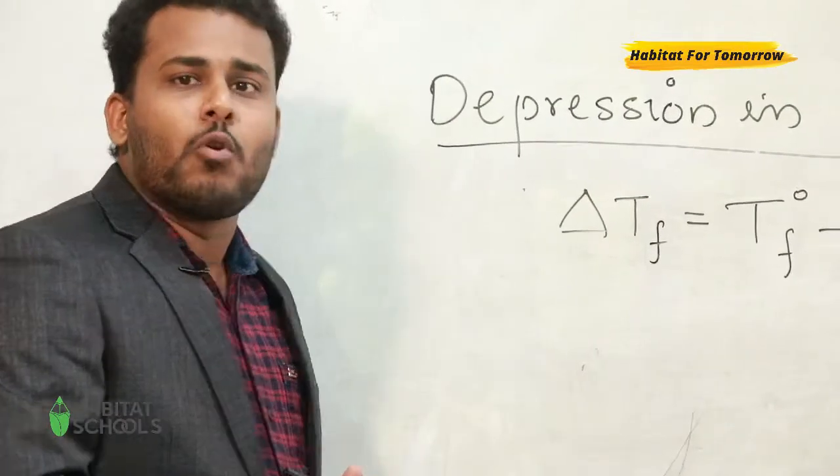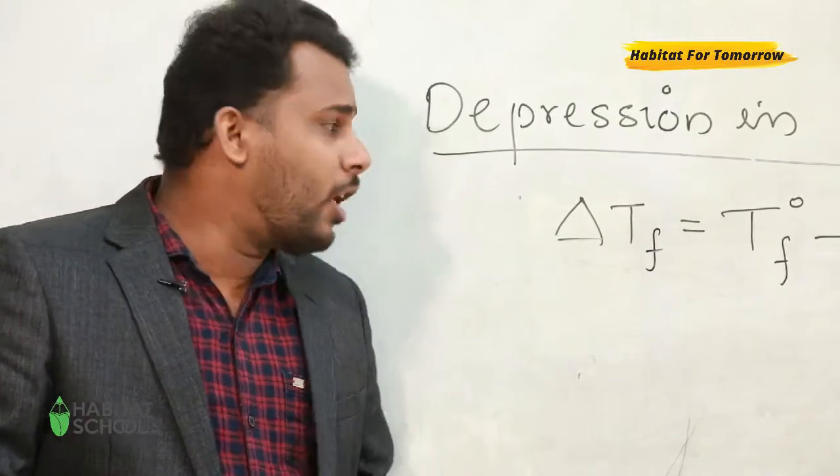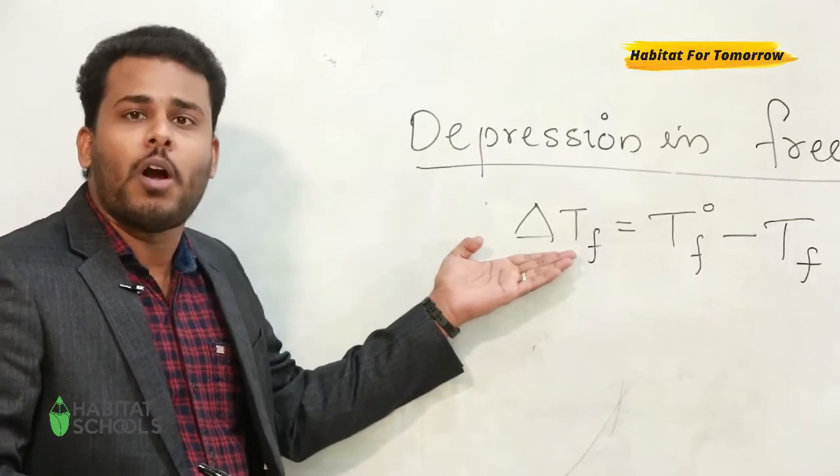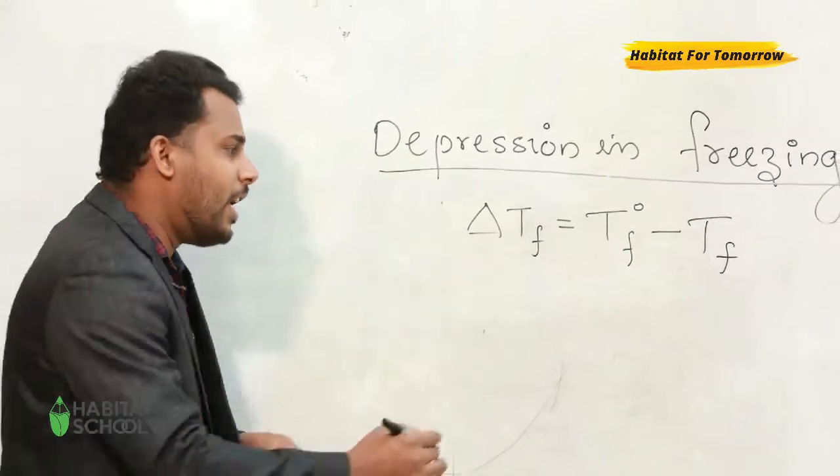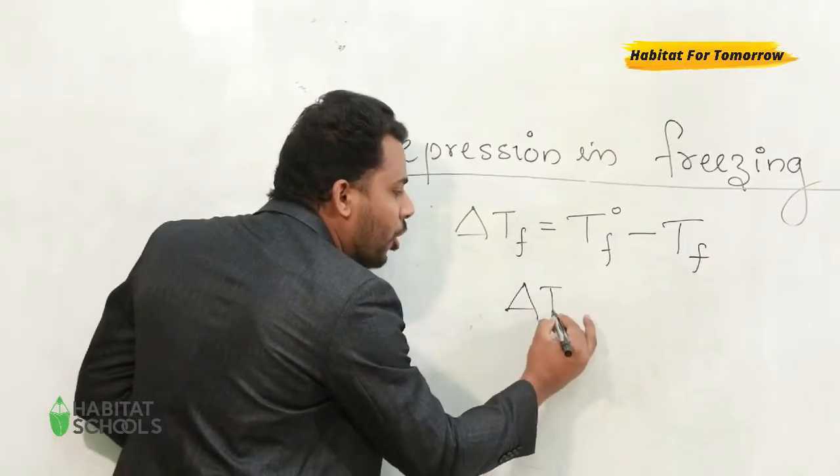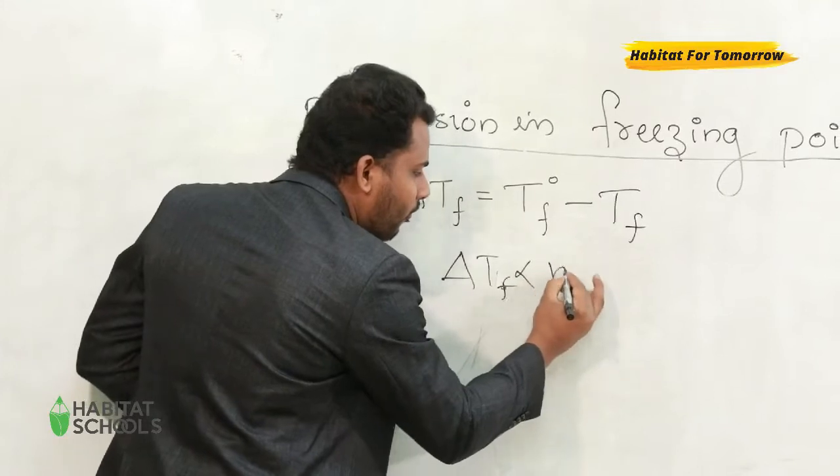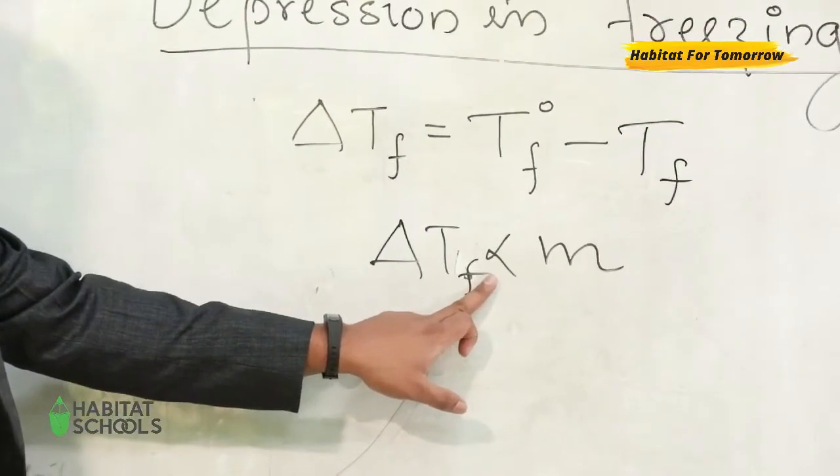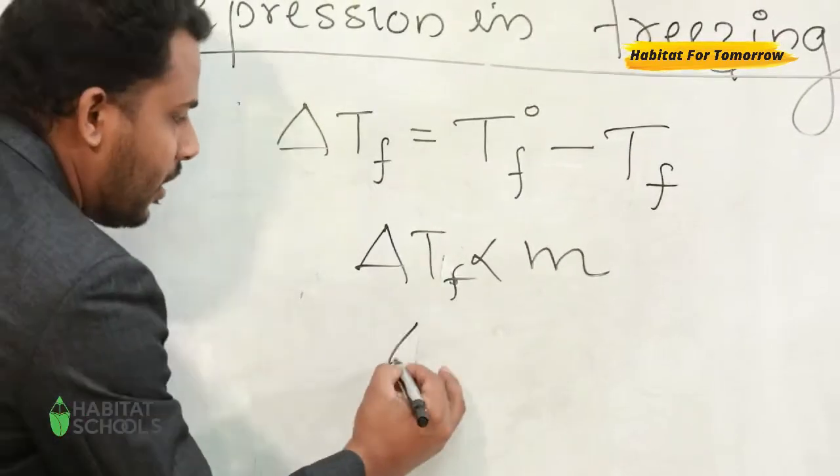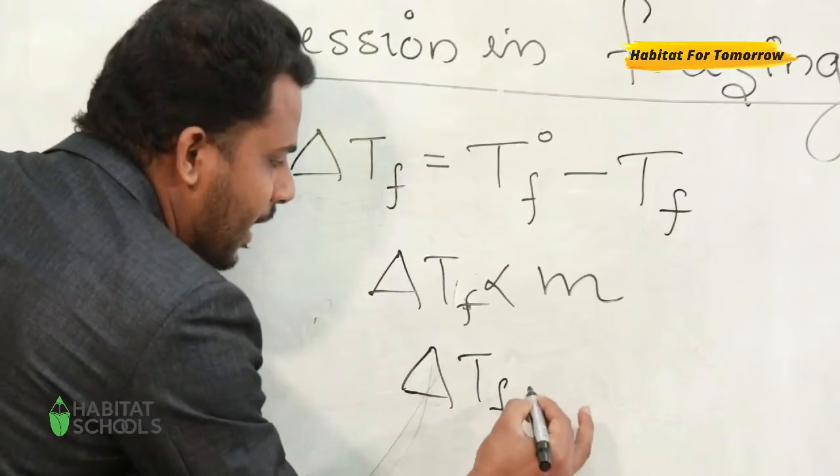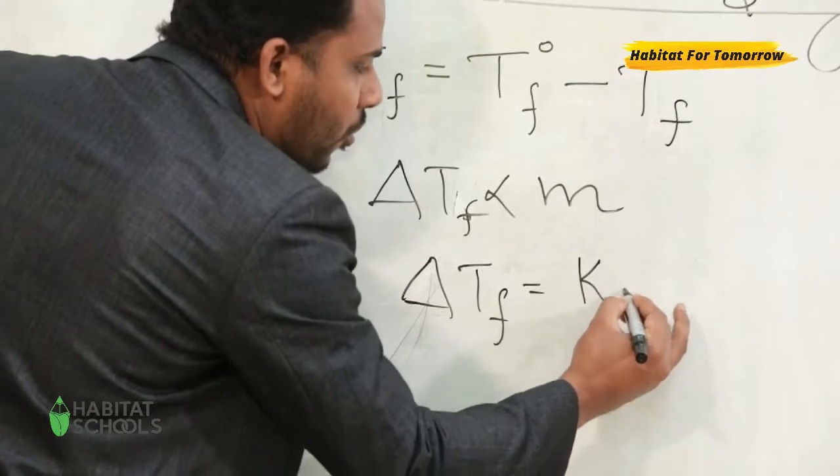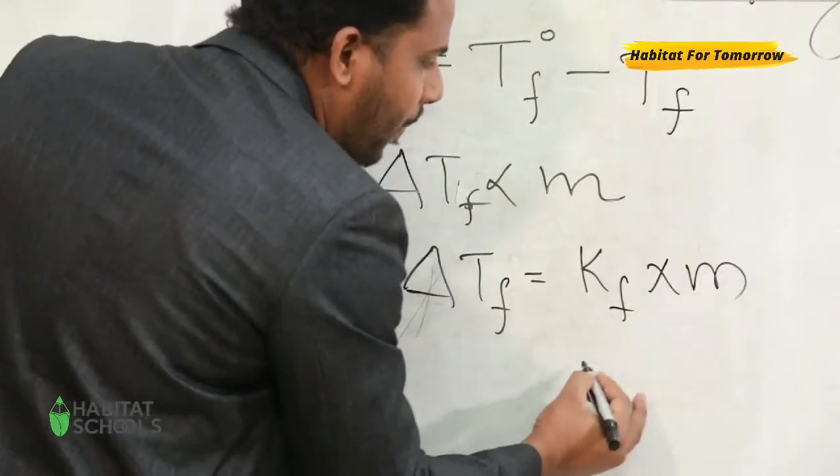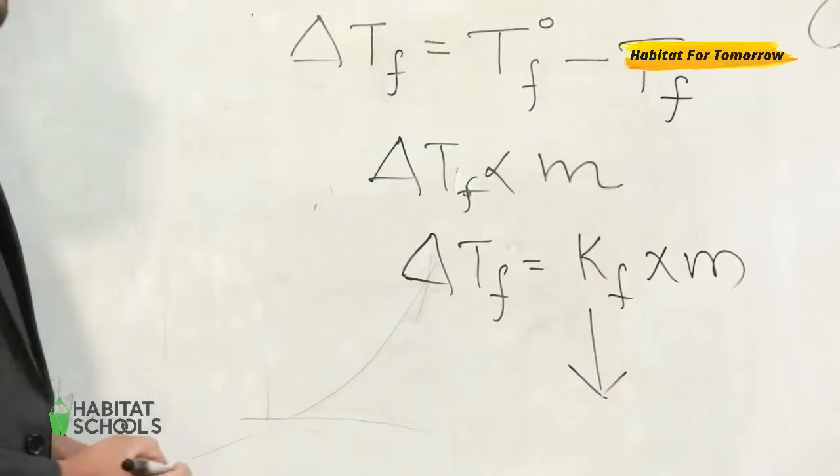Experiments have proved that the depression in freezing point, ΔTf, is directly proportional to molality. In order to avoid the proportionality, we can use a constant, so it can be written as ΔTf equals Kf into m, and Kf is...